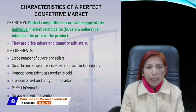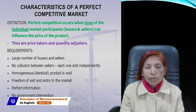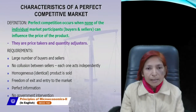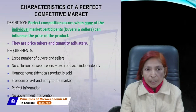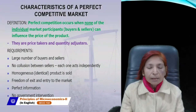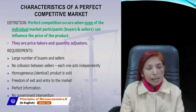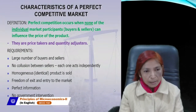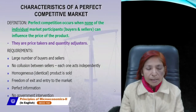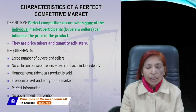Perfect Competition occurs when none of the individual market participants — buyers and sellers — can influence the price of the product. There are a very large number of buyers and sellers so that no individual buyer and no individual seller can influence the market price and market supply. Perfect Competition market is price taker, not maker. There are many assumptions or properties of perfect competition market.